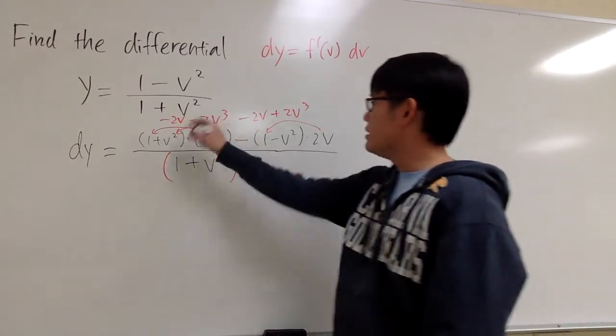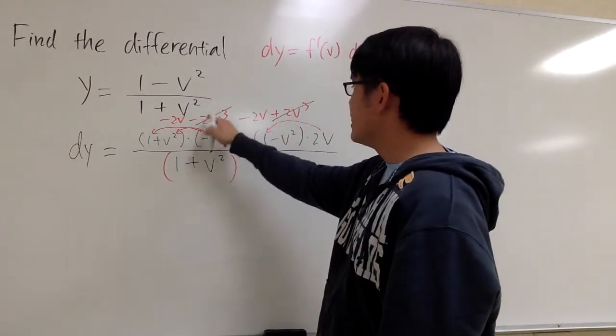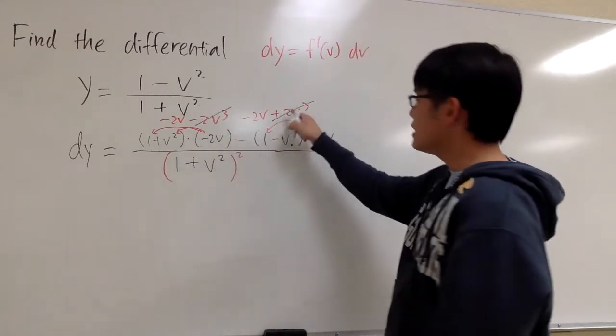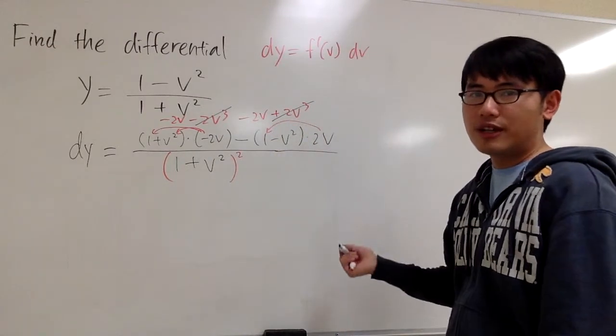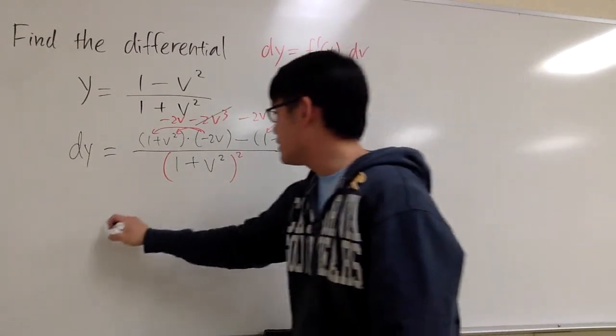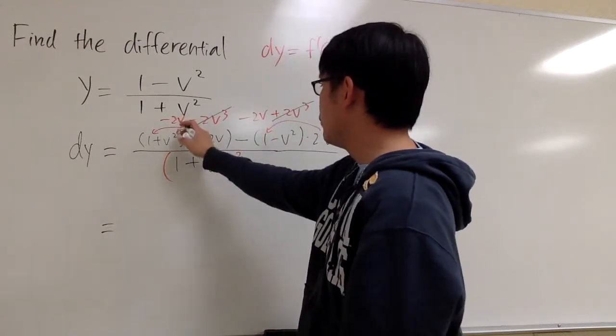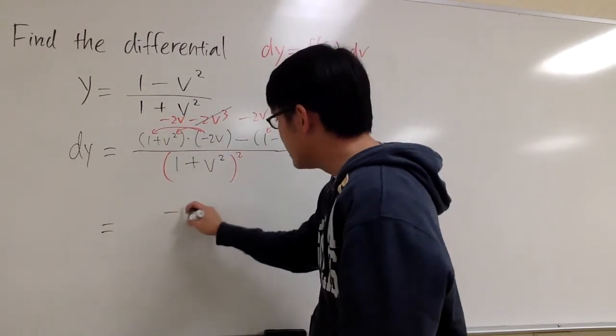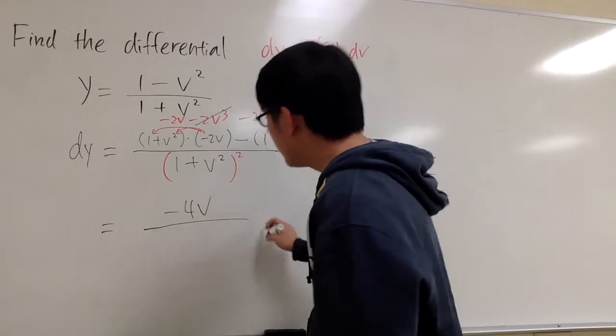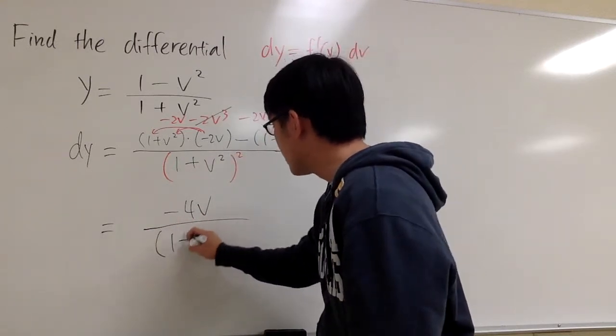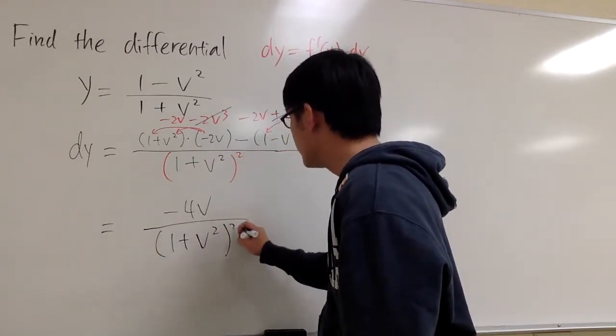And as we can see on the top, this and that, negative 2v to the third power, positive 2v to the third power, cancel each other out. Altogether, on the top, I have negative 2v minus 2v, that's negative 4v, over the denominator, which is 1 plus v squared and then squared.